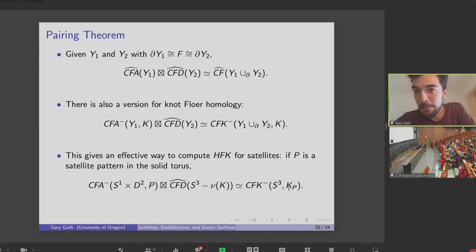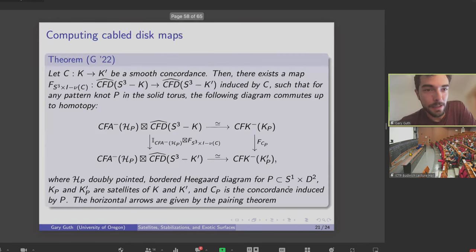So then we also describe these cable disks as gluing together two cobordisms with corners. And the next theorem, which I won't read all of, I'll just try and give you the idea. Given a concordance between K and K prime, we saw that that induced some cabled concordance between the satellite of K and the satellite of K prime. And the fact is that you can compute the maps induced by this satellite concordance by passing through bordered Floer homology in exactly the way you'd want, right?